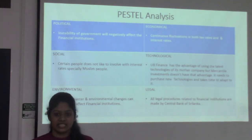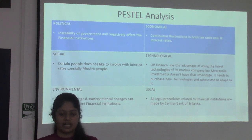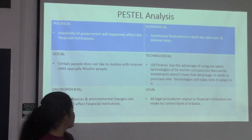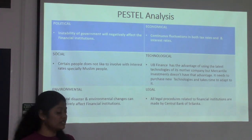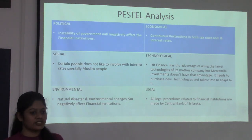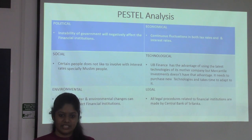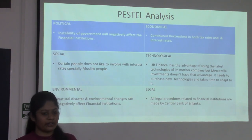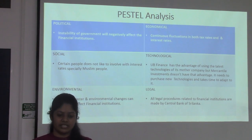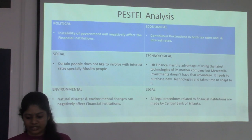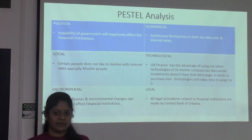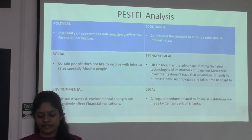Moving into PESTEL analysis: politically, the instability of government will negatively affect financial institutions. Economically, there is continuous fluctuation in both tax rates and investment rates. Socially, certain people don't like to involve in interest-based products, such as Muslim people, so companies need to innovate products which customers need and introduce more innovative ideas. Technologically, UB Finance has an advantage in using the latest technology available through their mother company, whereas Mercantile Investment doesn't have that advantage.